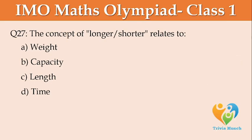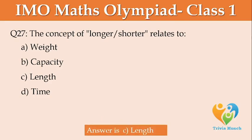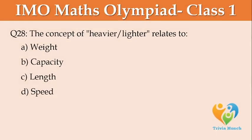The concept of heavier and lighter relates to: A: weight, B: capacity, C: length, D: speed.